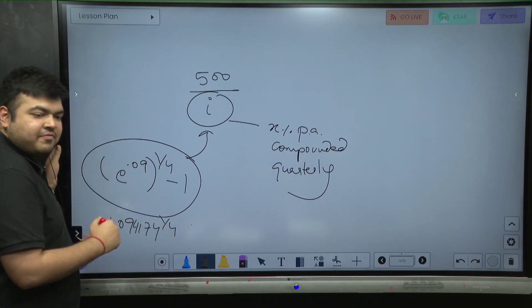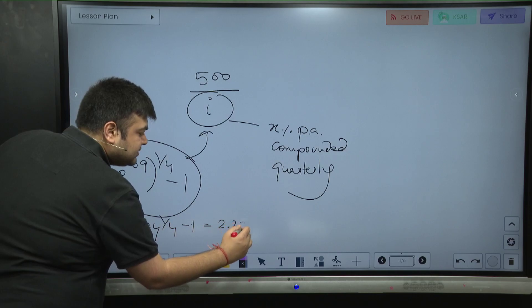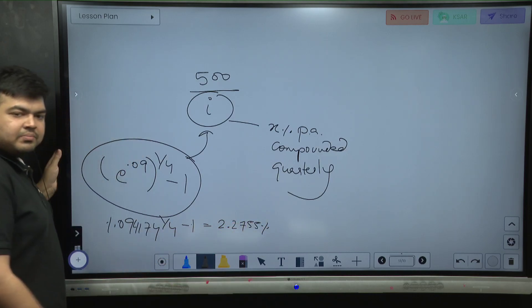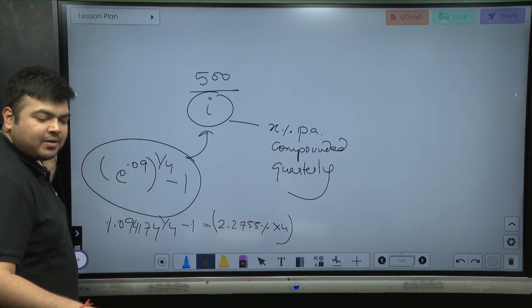Which is 1.022755 minus one, that is 2.2755 percent. This is what becomes in one quarter. This into four is basically your x percent per annum compounded quarterly - 9.1020 percent.